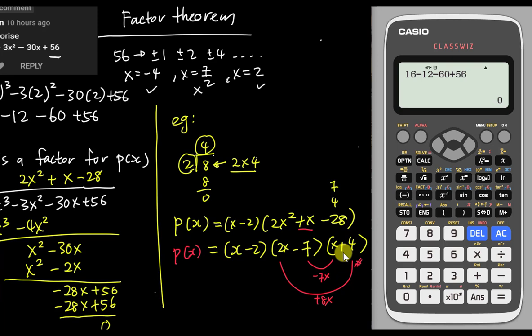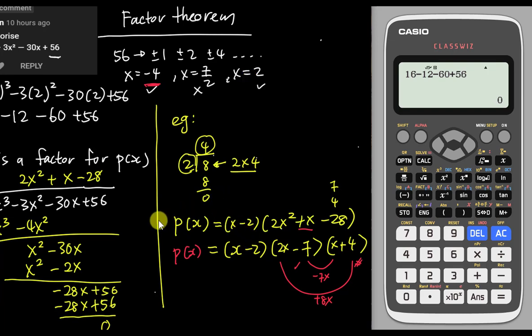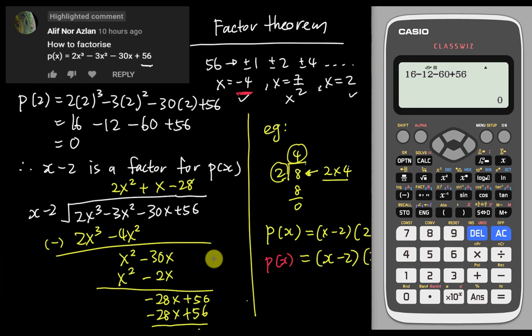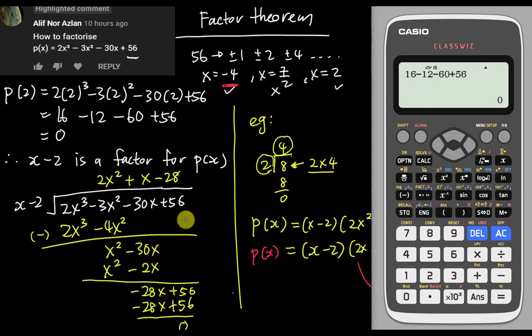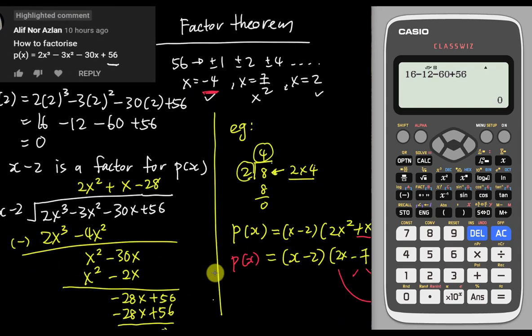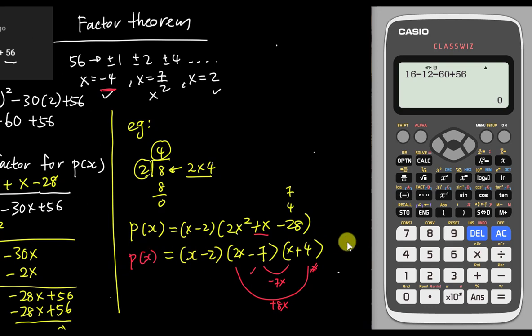I know the answer is correct because I already used the calculator to check. One answer is x equals negative 4: set x plus 4 equals 0, you get negative 4. Set 2x minus 7 equals 0, you get 7 over 2. Set x minus 2 equals 0, you get x equals 2. If the question asks you to solve, just let p(x) equal 0 to get all three answers. But here they only ask to factorize, so this is the final answer. I hope you find this video helpful — see you in the next video!